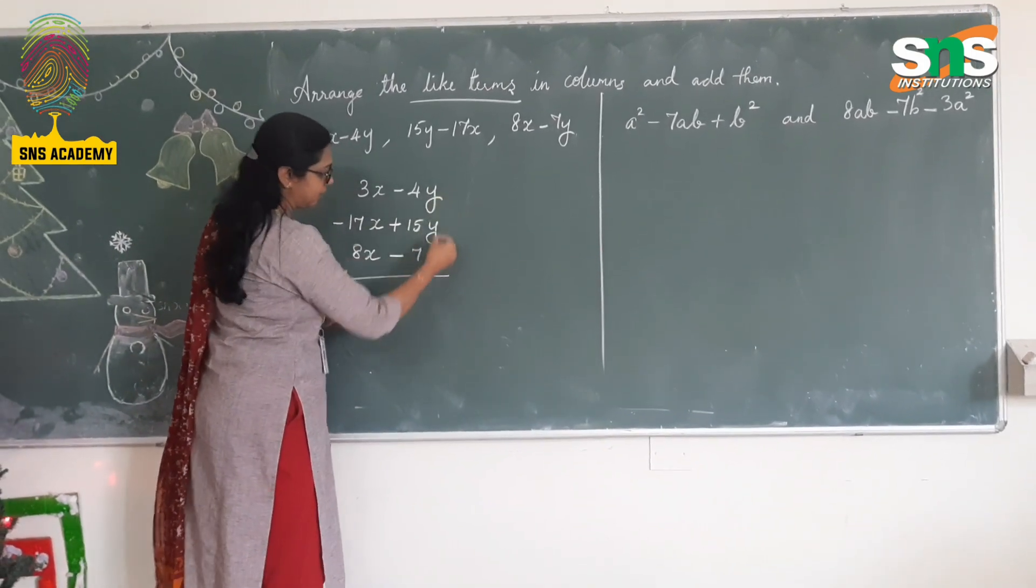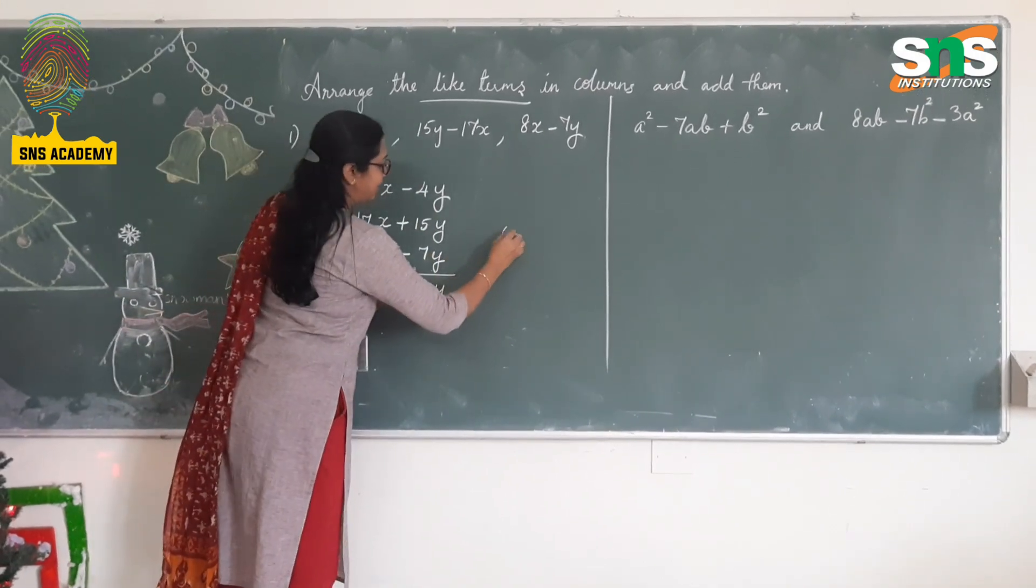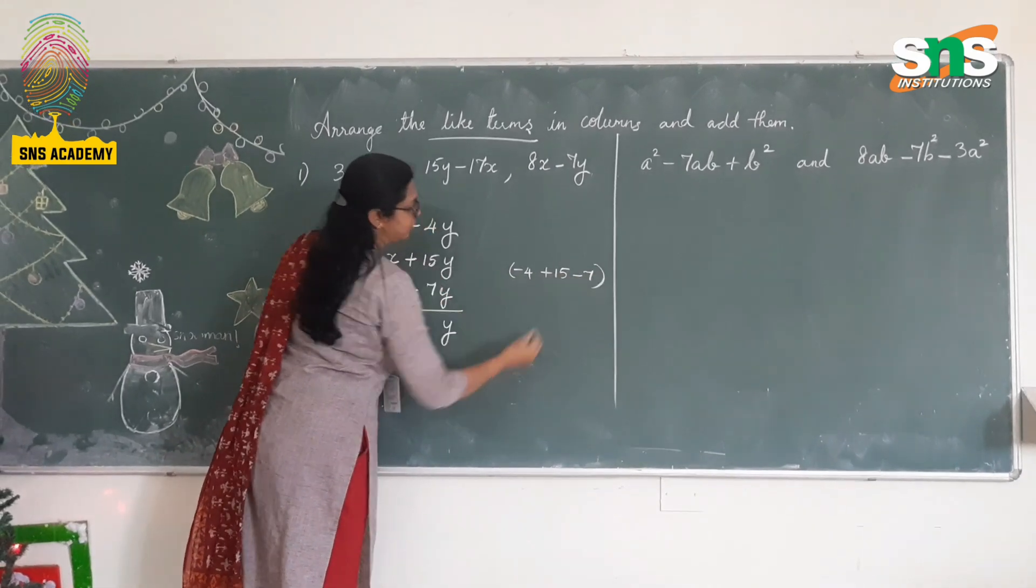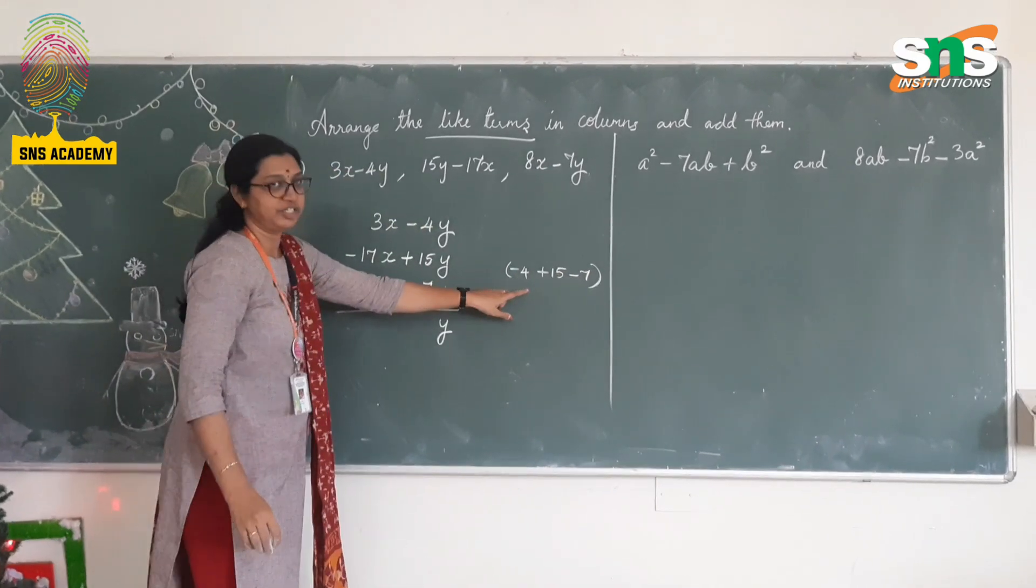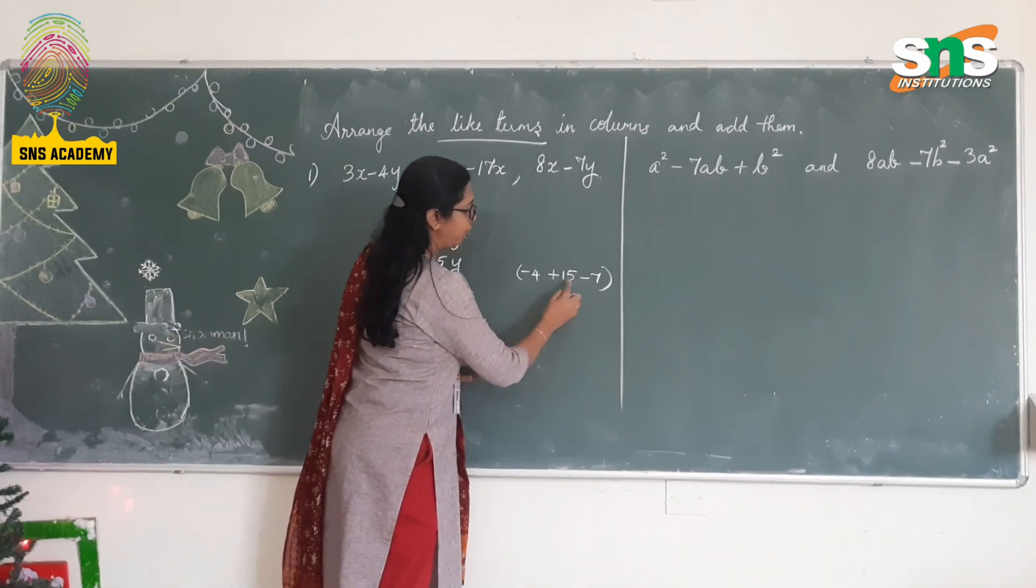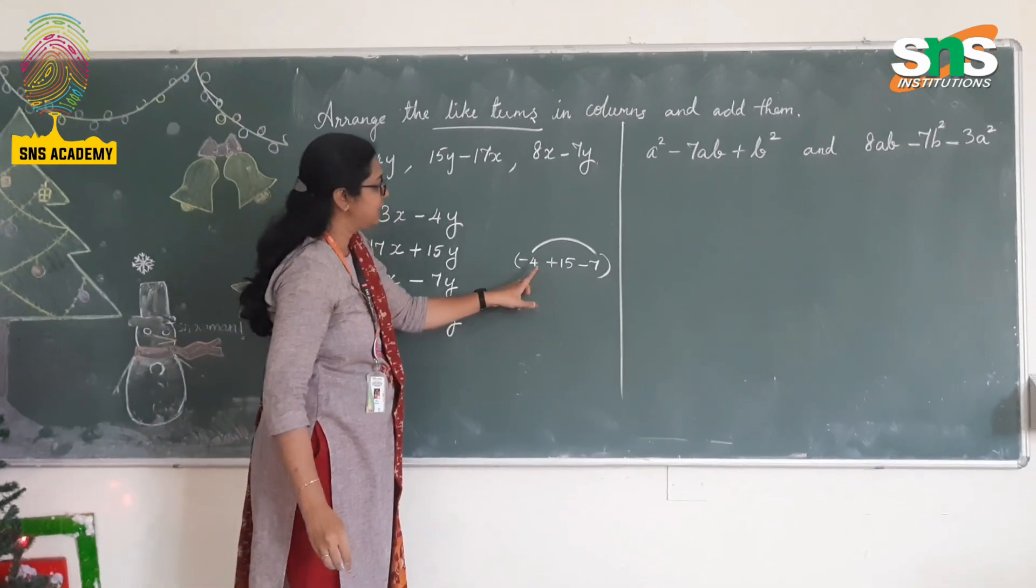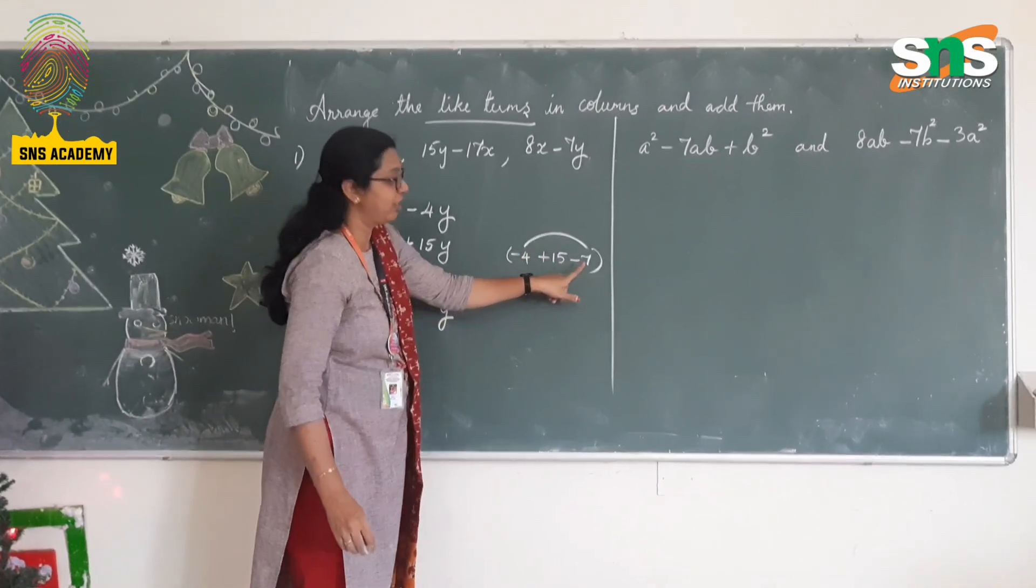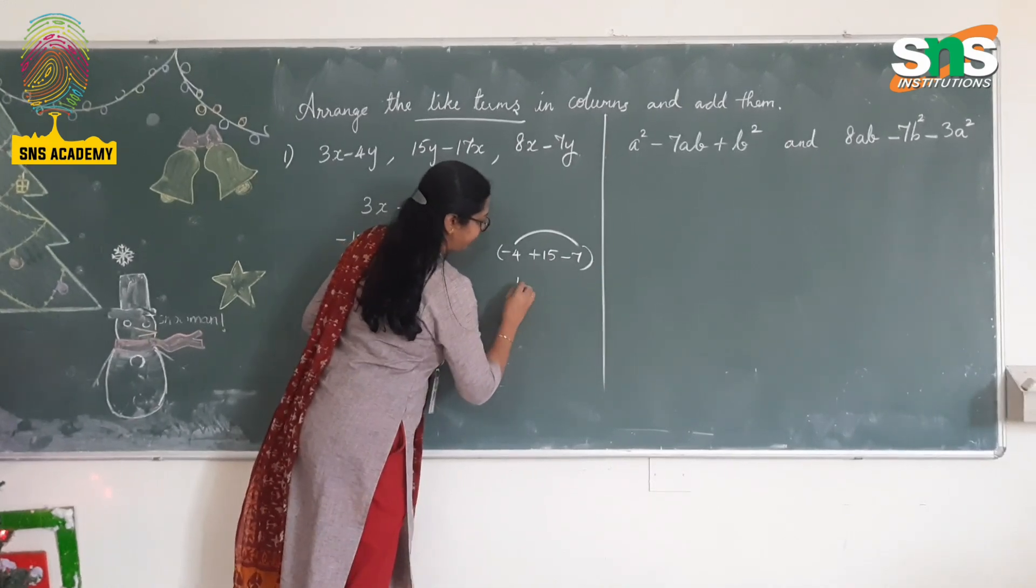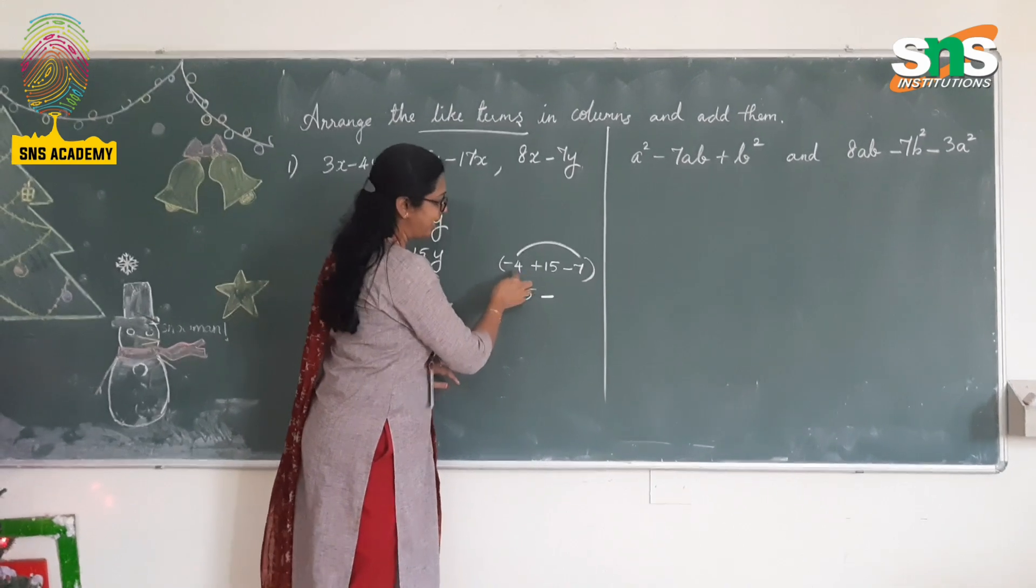The term here is like term y. So write y as it is. And what are the numbers here? So -4, +15, -7. These are the coefficients of the y terms. So -4, +15, -7. First, to add the signs with negative: -4, -7. Same sign, add with the same sign. So 15 minus 7 plus 4 is 11, so -11. Same sign, add it to the same sign.